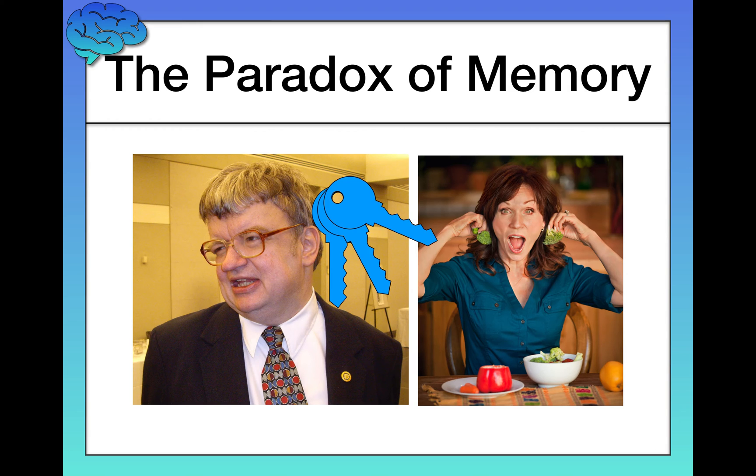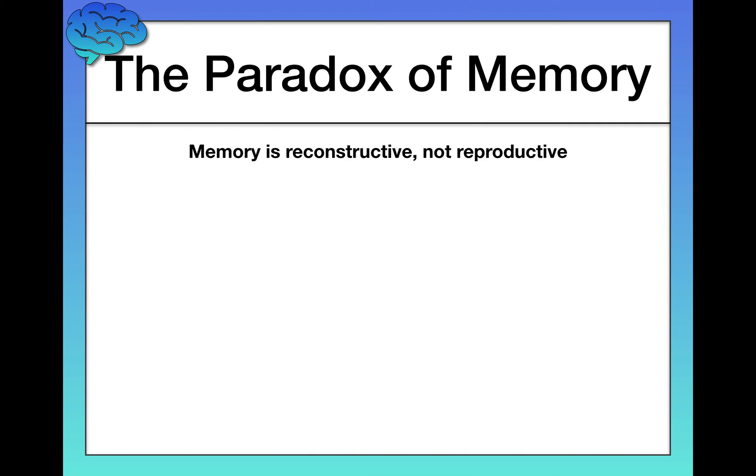Memory can be amazing, but it also is very limited. It has lots of limitations. And especially when we get to the third video in this series of videos on memory, you're going to see that we make lots of memory errors. We're going to talk about how we make those kinds of errors and why. So again, it's just a really interesting testament to this paradox of memory.